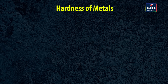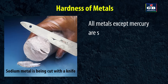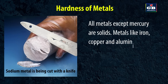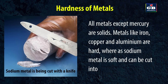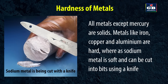Hardness of metals: All metals except mercury are solids. Metals like iron, copper and aluminium are hard, whereas alkali metals like sodium, potassium and lithium are soft and can be cut into bits using a knife.